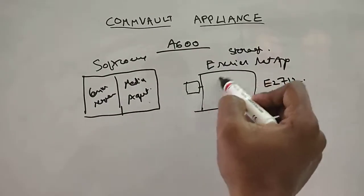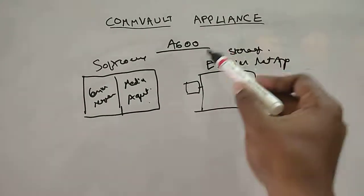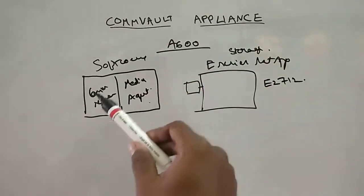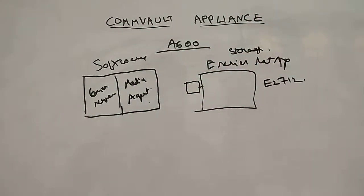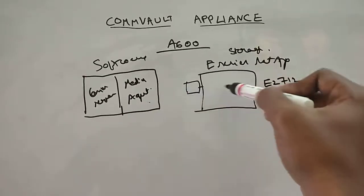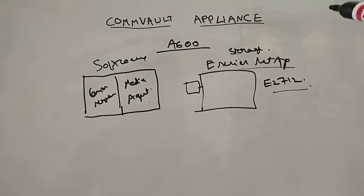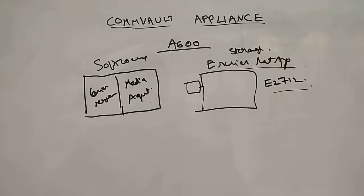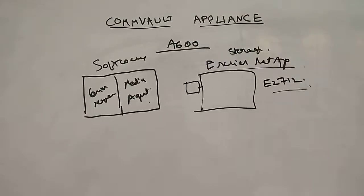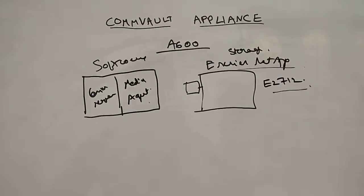If you don't have one, the A600 has the capability of installing both the CommServe and the media agent in the installation wizard. Towards the end of the installation, it will also ask to set up the E-series NetApp E2712 as the storage device. You can configure storage pools and configure replication policies. You can start doing backups and restore jobs.